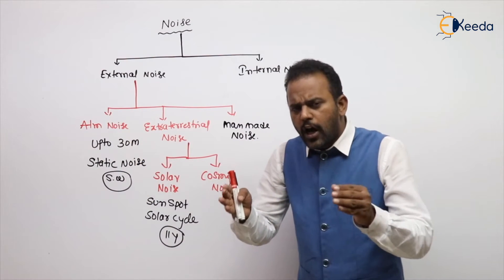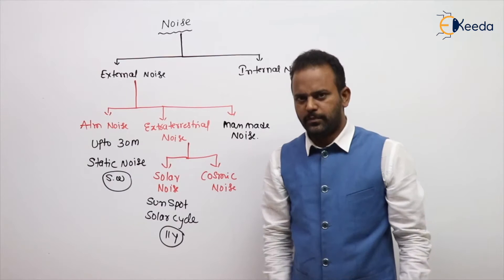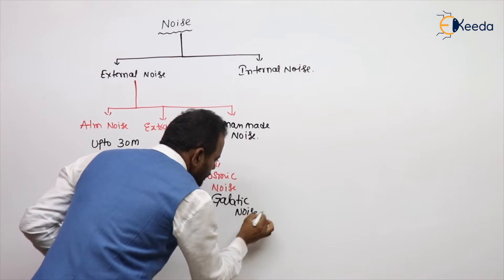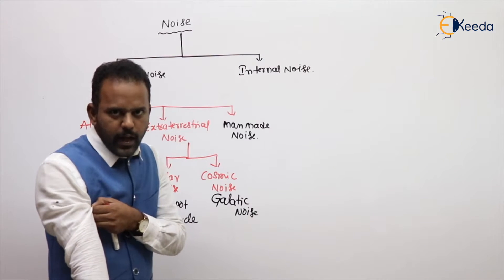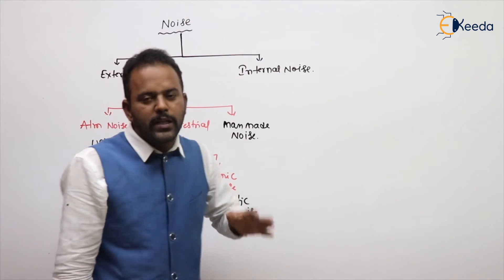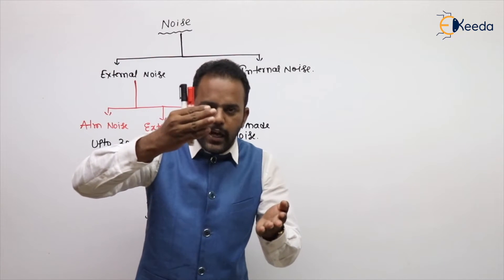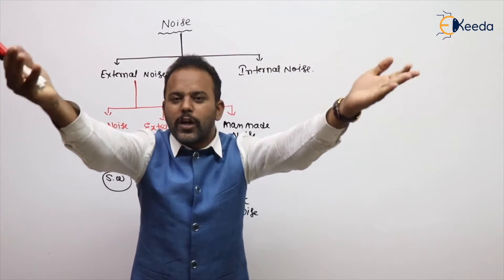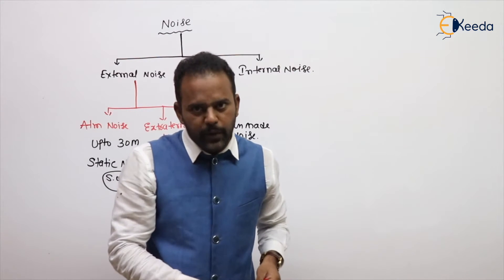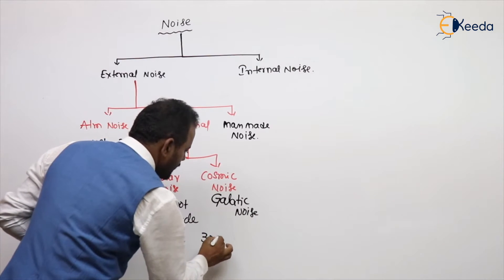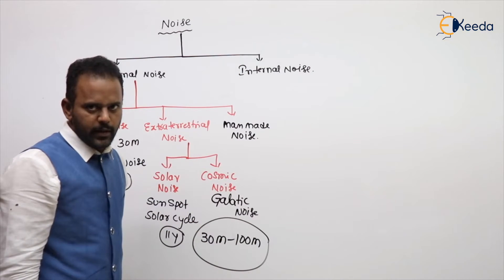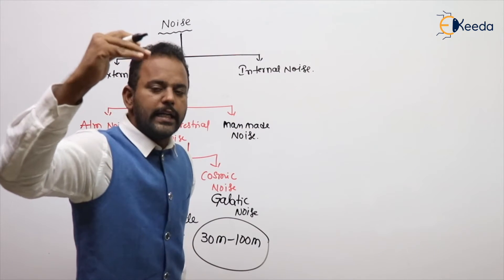Cosmic noise is the noise due to all the stars put together, and it is also called galactic noise. These two extra-terrestrial noises — solar noise and cosmic noise — will not have an effect up to 30 megahertz, because anything coming up to 30 megahertz is reflected by the ionosphere and does not reach the earth's atmosphere. So both these noises have an effect from 30 megahertz to 100 megahertz.